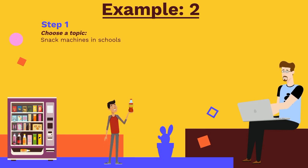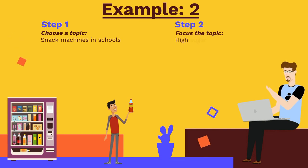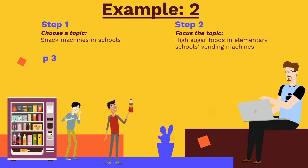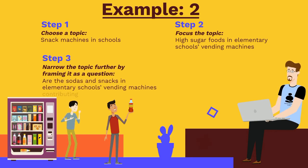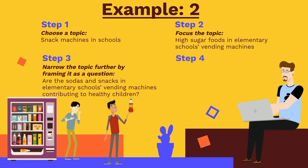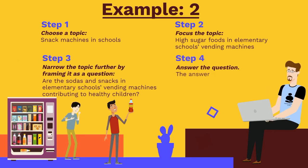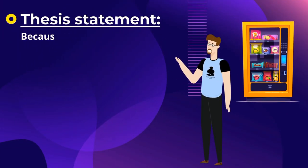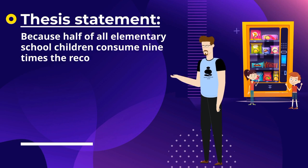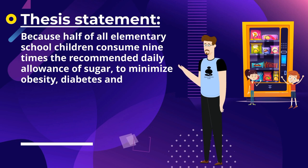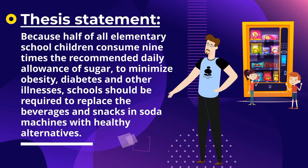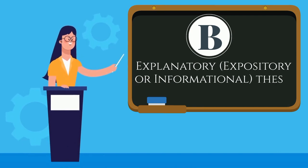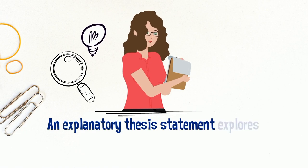Example two: Step one, choose a topic — snack machines in schools. Step two, focus the topic — high sugar foods in elementary schools' vending machines. Step three, narrow the topic further by framing it as a question: are the sodas and snacks in elementary school vending machines contributing to healthy children? Step four, answer the question. Thesis statement: because half of all elementary school children consume nine times the recommended daily allowance of sugar, to minimize obesity, diabetes, and other illnesses, schools should be required to replace the beverages and snacks in soda machines with healthy alternatives.